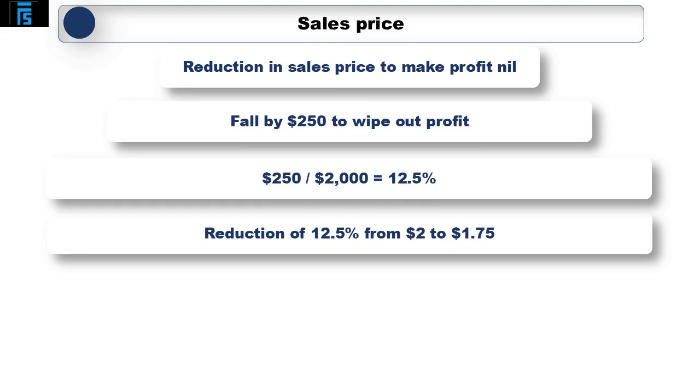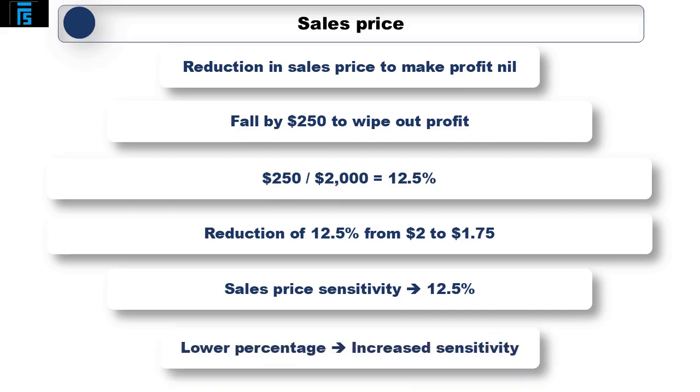Jack would say he is 12.5% sensitive to his estimate of sales price. A lower percentage would imply increased sensitivity.